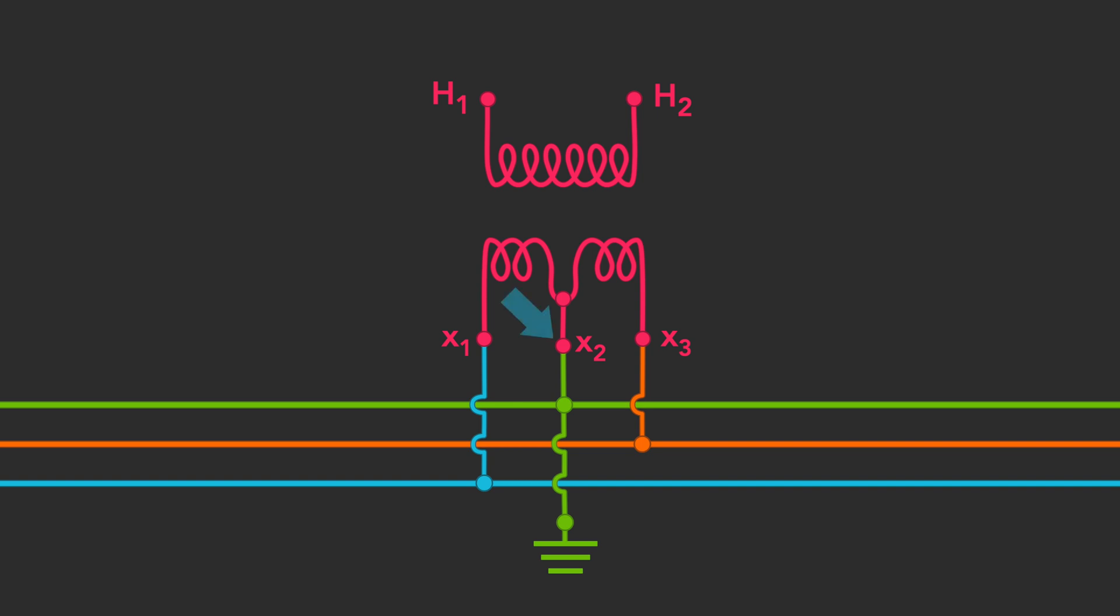Connections measured between the grounded neutral and either one of the hot legs will each supply 120 volts. Connections measured between the two hot legs will supply 240 volts.